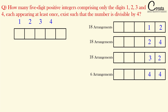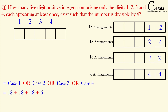Adding all cases: Case 1 gives 18, Case 2 gives 18, Case 3 gives 18, and Case 4 gives 6. Our final answer is 18 + 18 + 18 + 6 = 60 arrangements. That is the answer to the first question. Let's move to the next question.